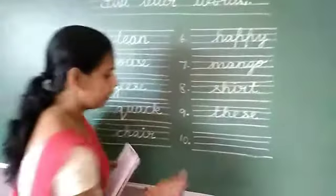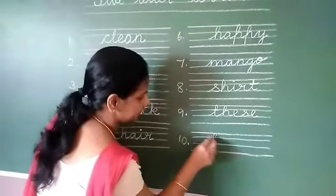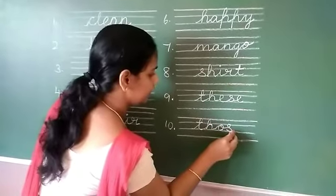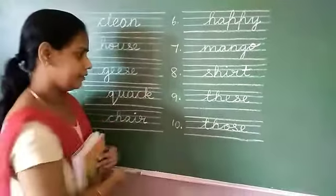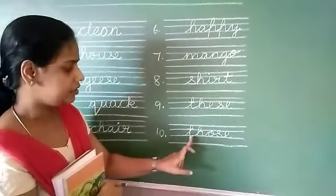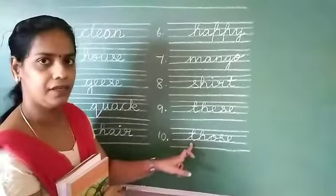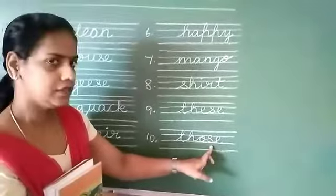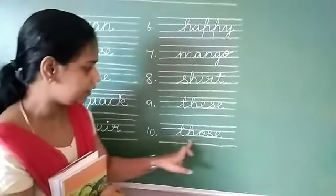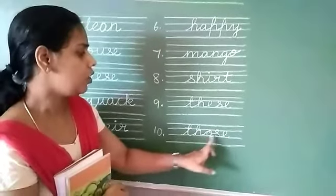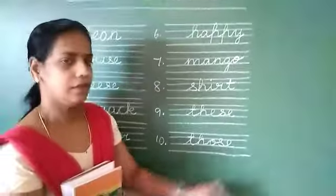We will go for the last one. Same thing — here also T and H together become the 'Th' sound, which sounds like D. O sound O. S sound S. E sound A. So together: Those. T-H-O-S-E: Those.